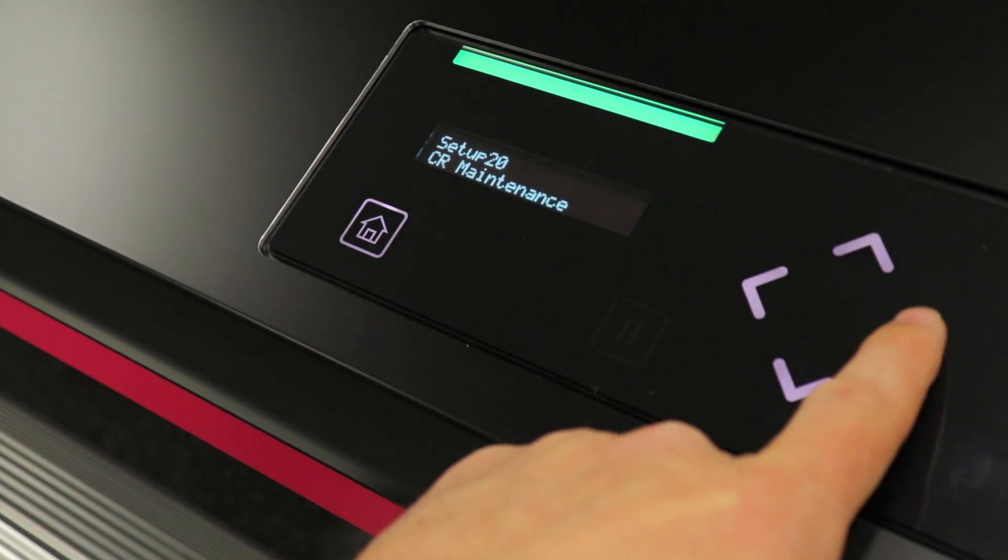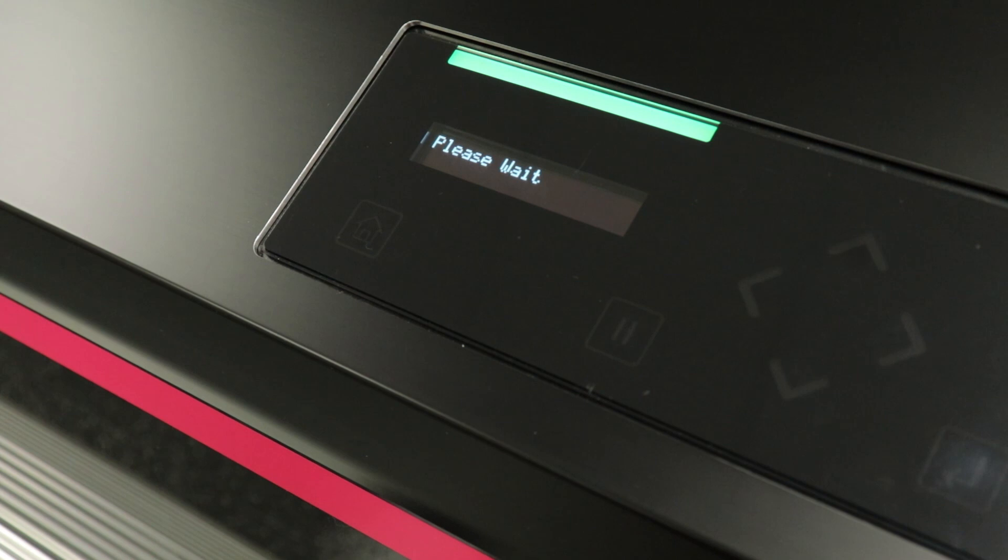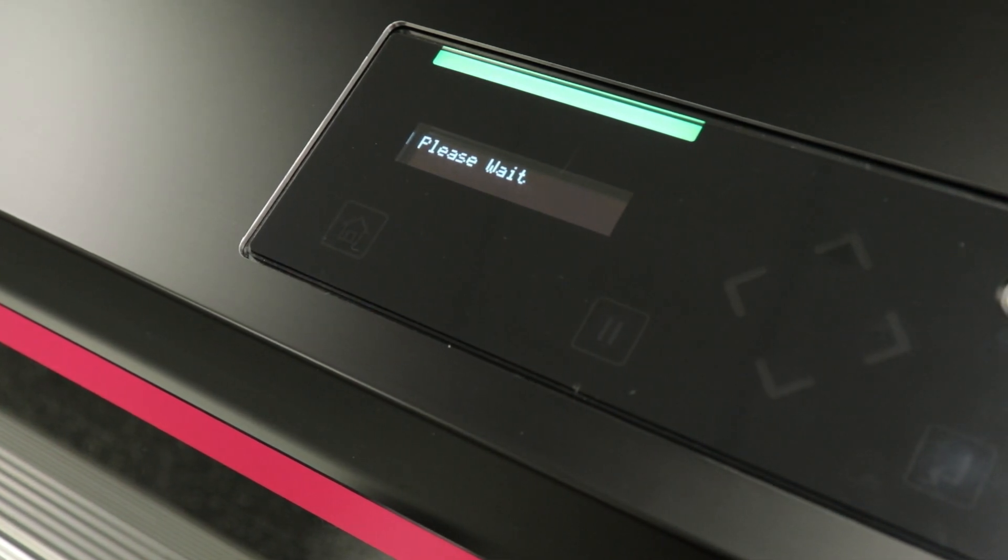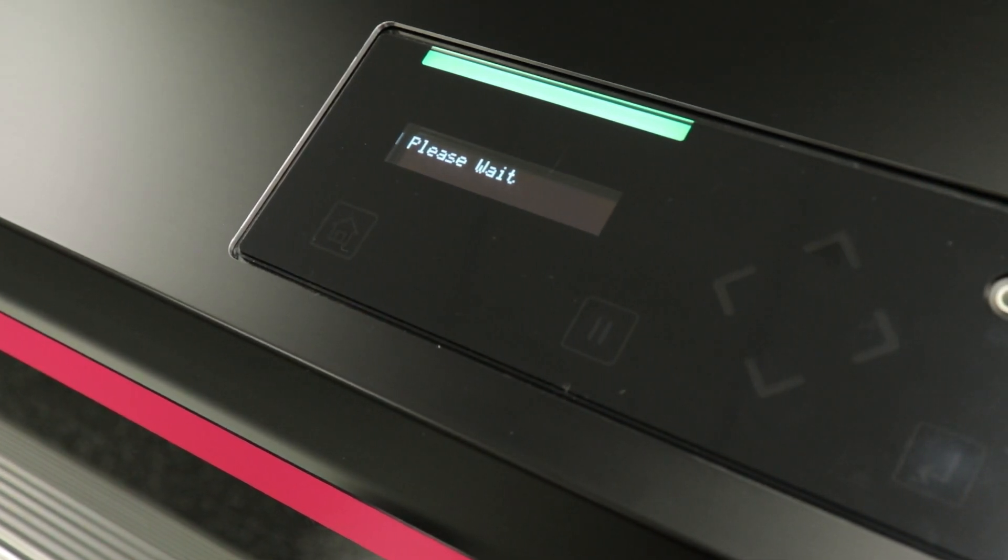Once there, press the right arrow key and hit enter to start CR maintenance. This will shuttle the carriage to the left side of the printer so we can access it through the maintenance doors.